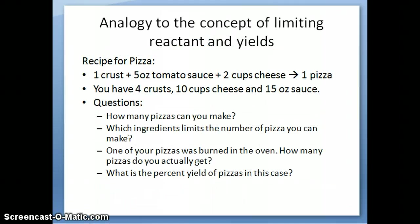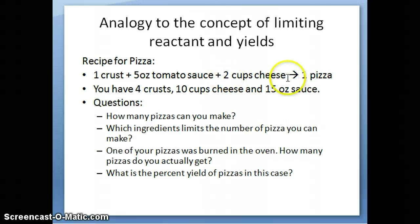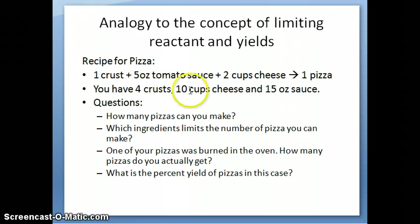Let's talk about the concept of limiting reactant and yield using an analogy — in this case, baking pizza. So let's say you have a recipe to make a pizza and that recipe requires: one crust, five ounces of tomato sauce, and two cups of cheese. In your pantry you find that you have: four crusts, ten cups of cheese, and fifteen ounces of sauce.